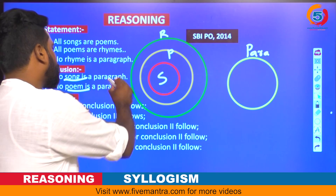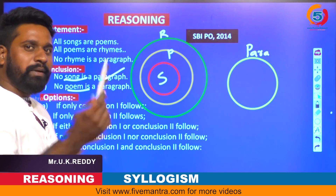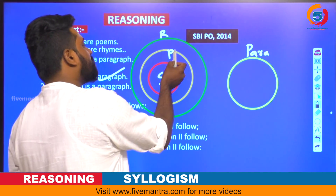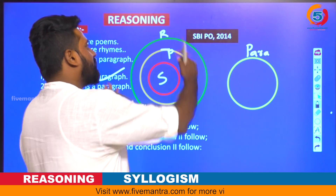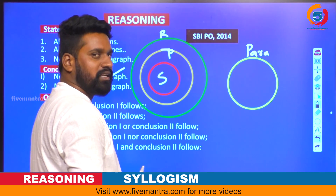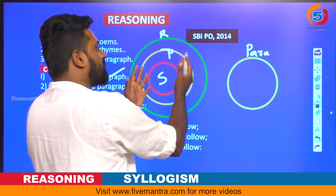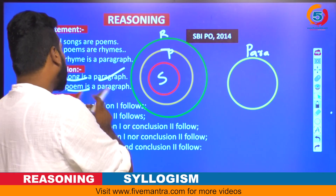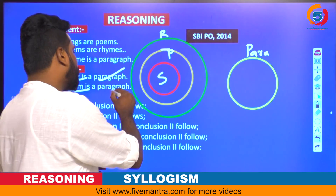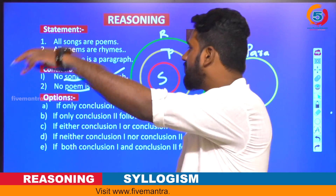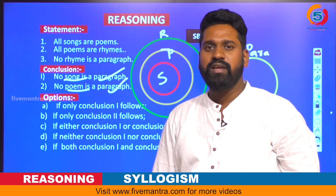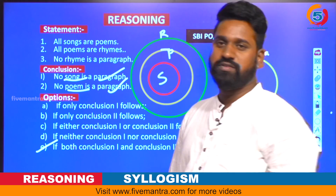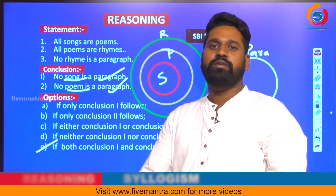No song is a paragraph — yes, correct. Coming to the second conclusion: no poem is a paragraph — is it correct? Yes, because poems are also under rhymes only. If you intersect paragraph with poems, it also intersects with rhymes, which is a wrong statement. So no poem is a paragraph is also a direct conclusion. Both conclusion one and conclusion two follow, so the answer is the fifth option — both conclusions follow.